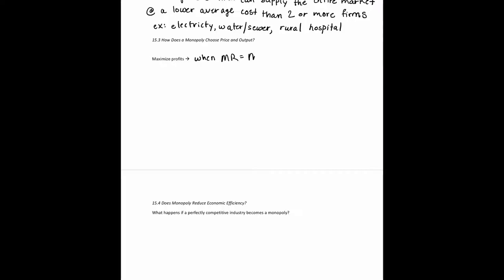Monopolies maximize profit when MR equals MC, and they face a downward sloping demand curve. As a monopolist decreases price to expand output, two effects occur: revenue increases from selling an additional unit, but revenue also decreases because the price reduction applies to existing customers. Just like monopolistic competition, the monopolist has a marginal revenue curve that lies below the demand curve.